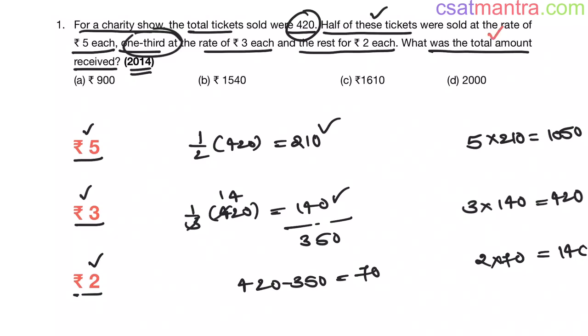Now total amount received is equal to 1050 plus 420 plus 140, that is equal to 1610. So our answer is C.